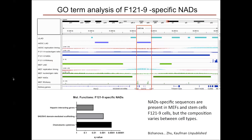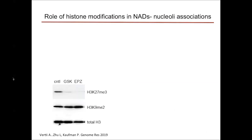We conclude that there are NAD-specific sequences present in at least two distinct cell types — MEFs and stem cells — however, the composition of NADs varies between different cell types. This is one direction where we are interested in changes in NADs throughout differentiation. We are currently analyzing NADs from human stem cells and human fibroblasts. Another question we became interested in, already addressed for lamina-associated domains, is whether heterochromatic features are important for NAD association.